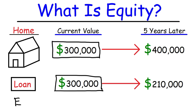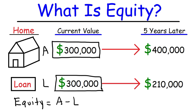Equity is the difference between assets and liabilities. Your home is an asset because you can go to the market and sell it in exchange for cash — it has a value. The loan is a liability because it's something you have to pay back. So right now, your equity is zero because these two are the same.